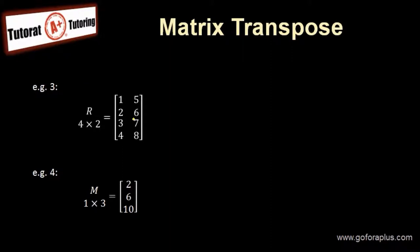Example three. This is matrix R, 4 by 2. So it becomes R transpose, 2 by 4.